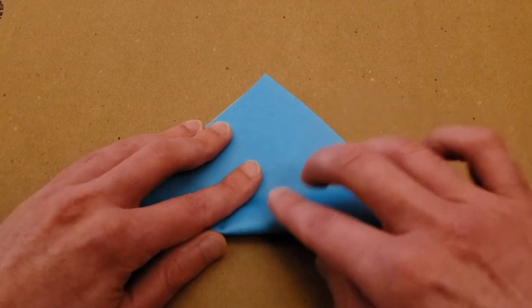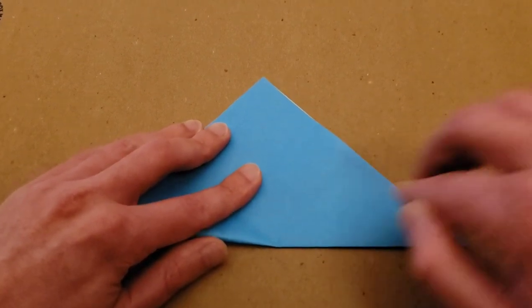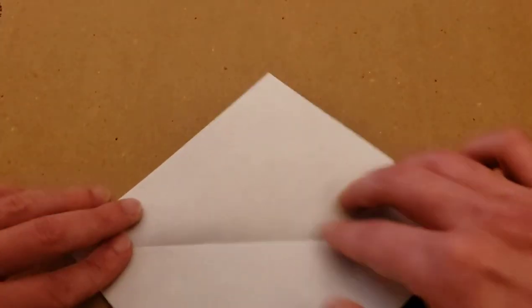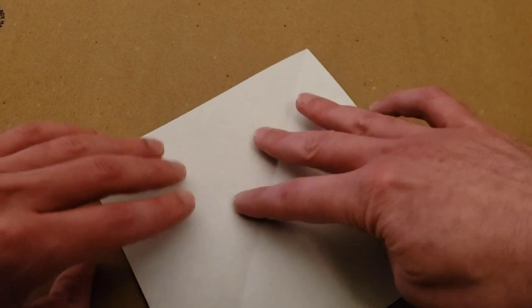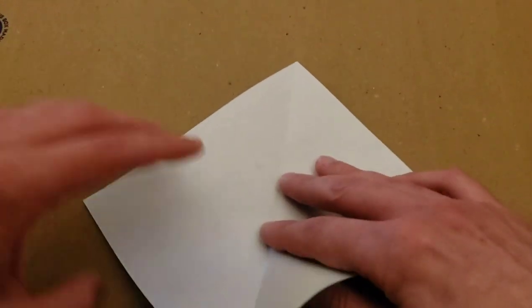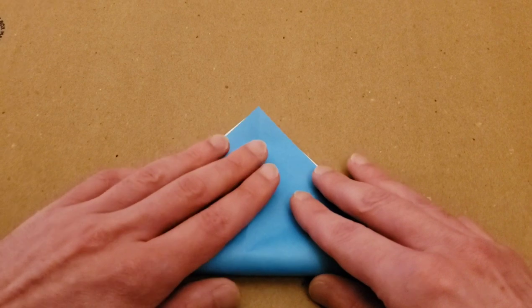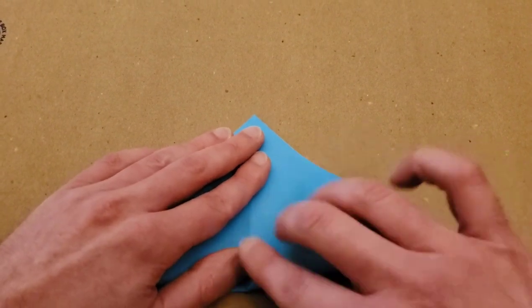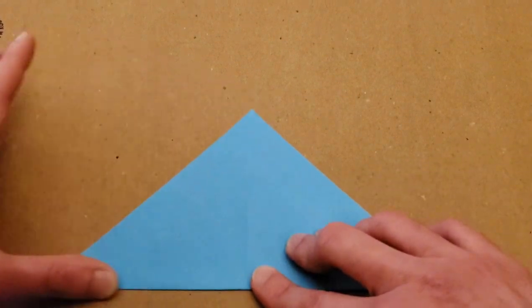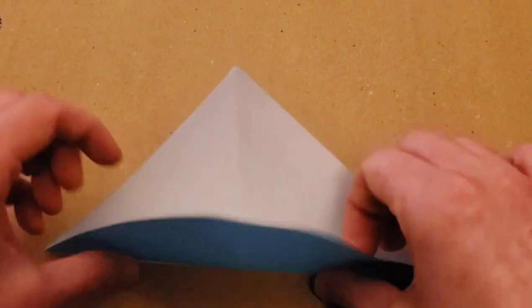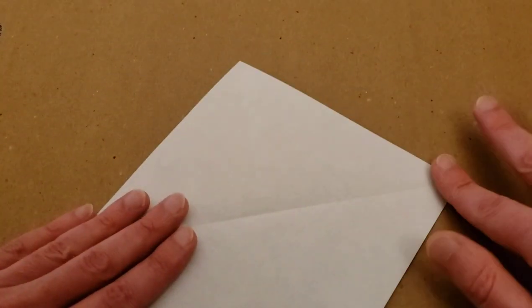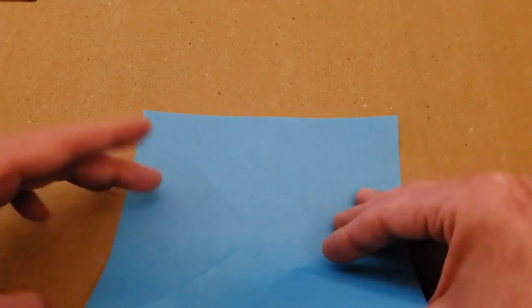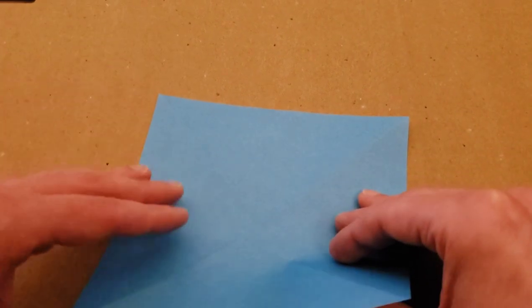So fold it in half to make a triangle, open it up, and then turn, and then fold it again into a triangle the opposite way. Open it up, flip it over, and now we do the rectangles, because we want our balloon to be blue, not white.